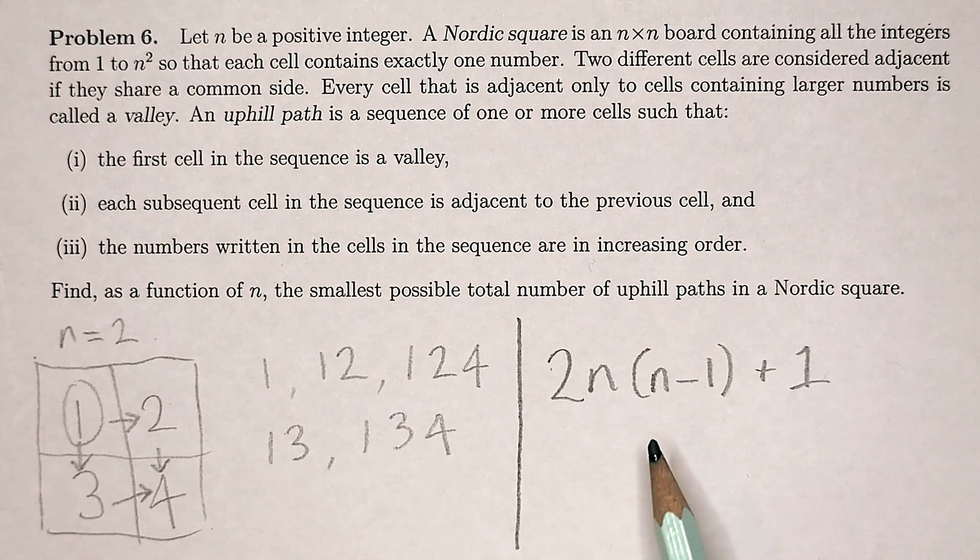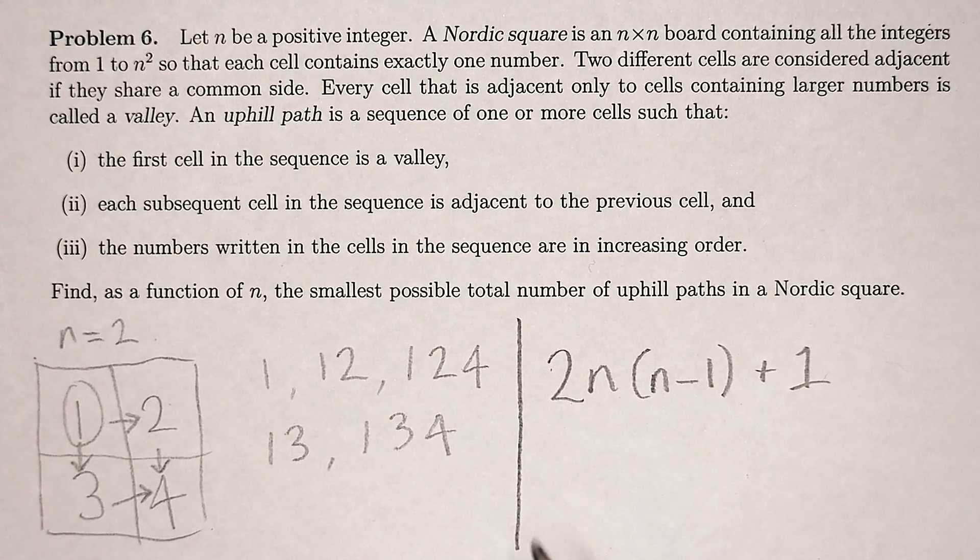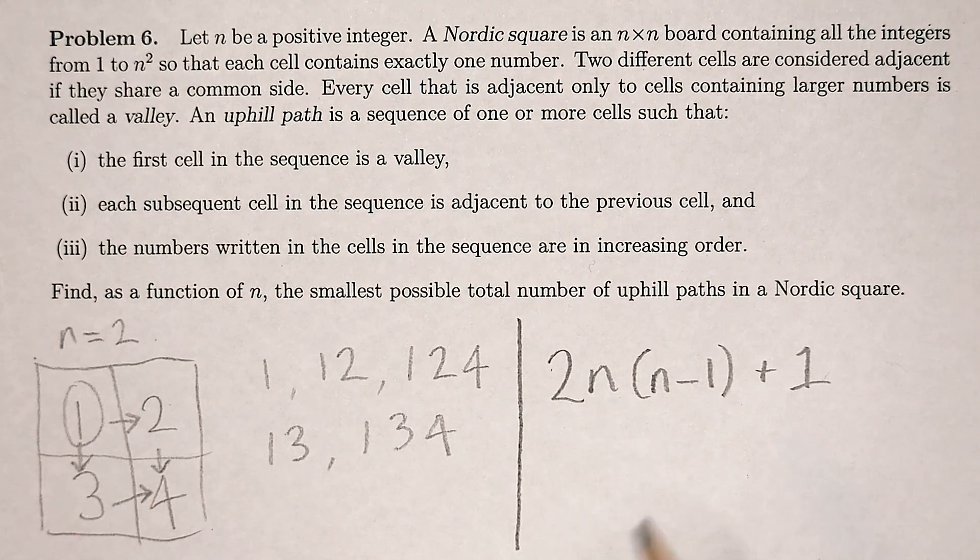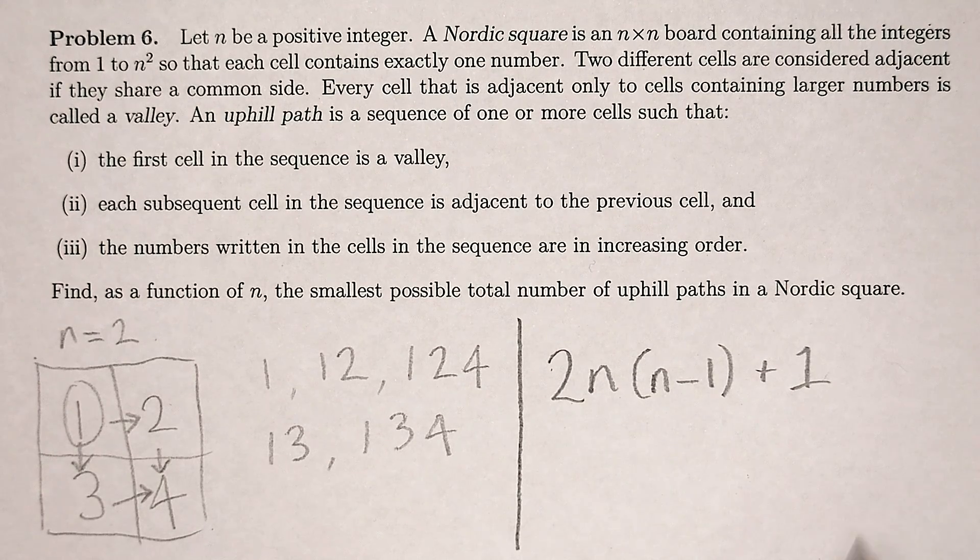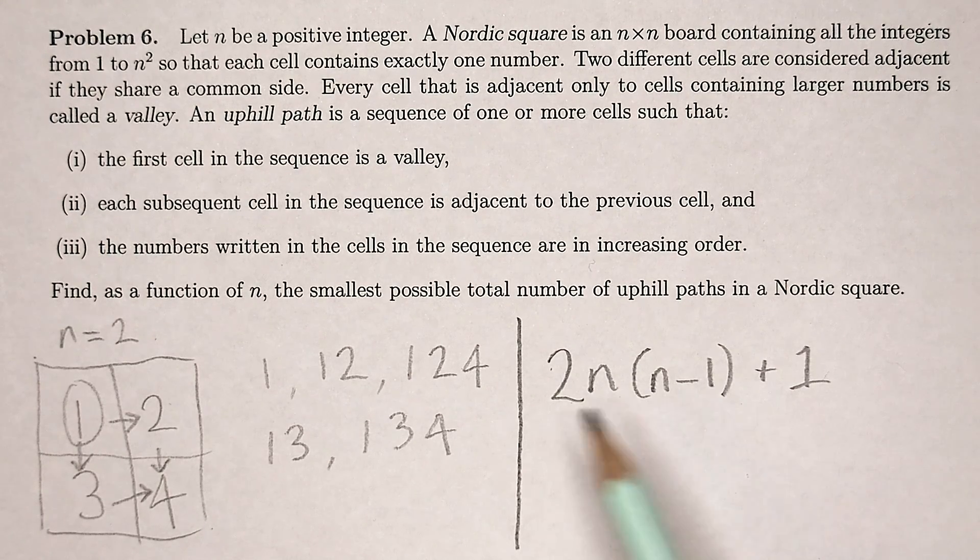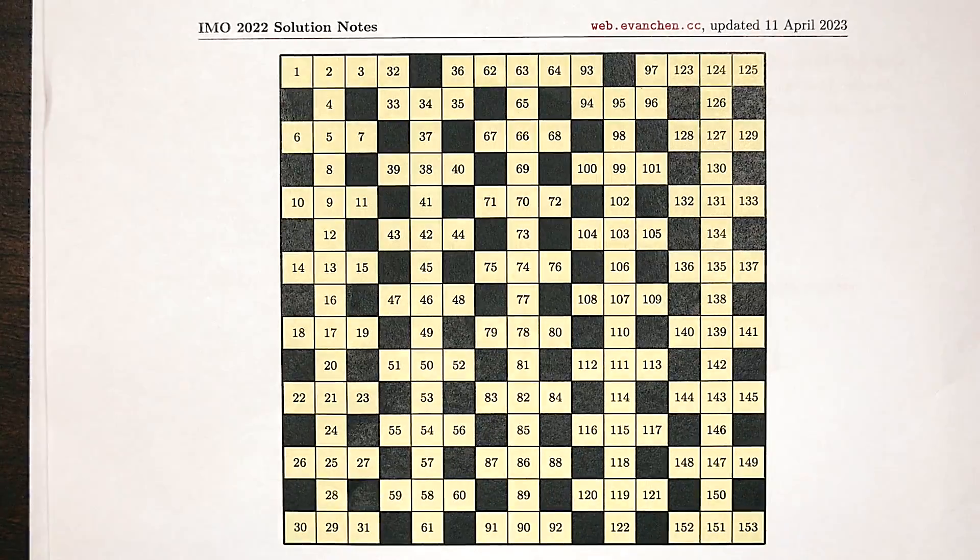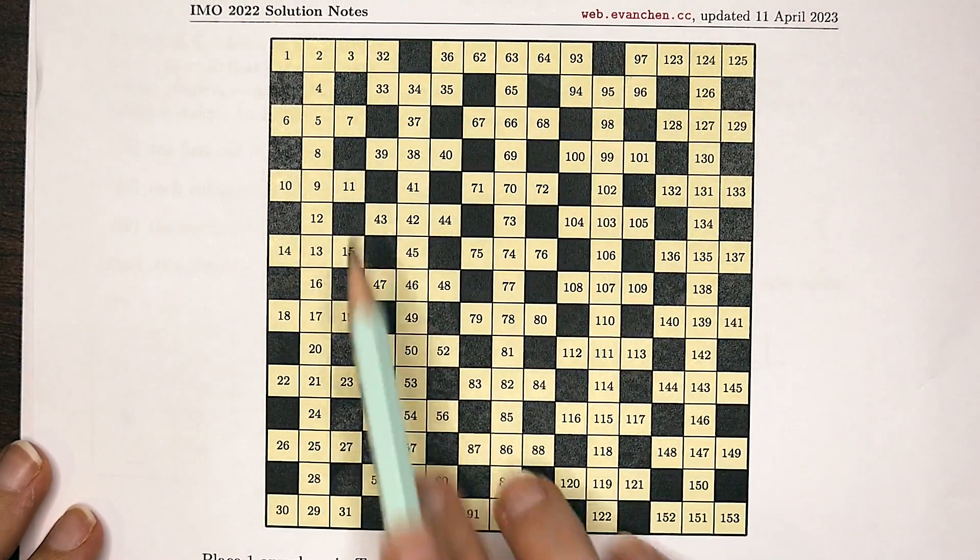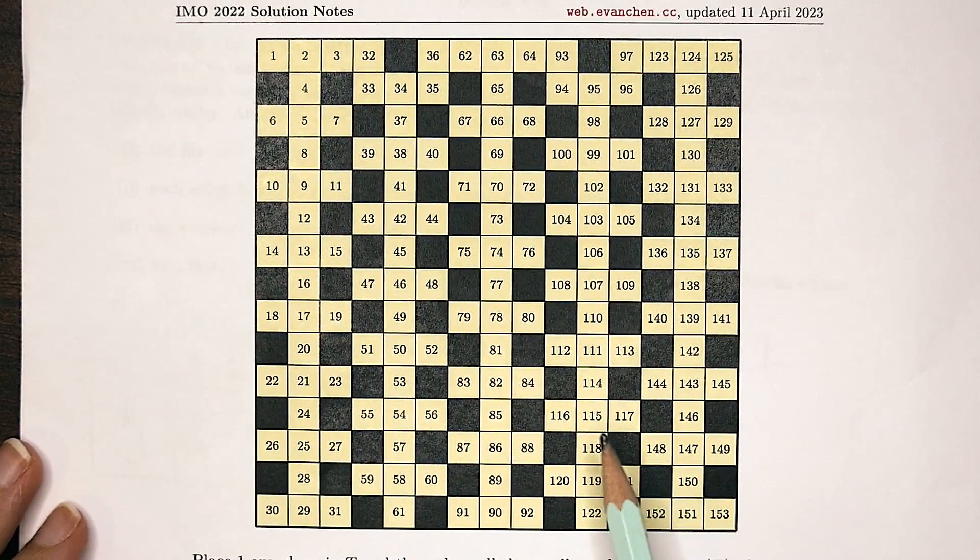That's basically the answer here, and that will give you some points. But more points will come from the harder task of describing how to arrange the numbers to get this minimum, and that part of the solution comes from describing a tree-like structure like this.